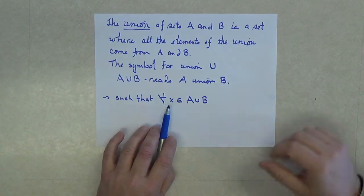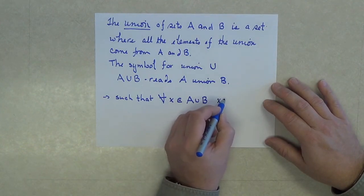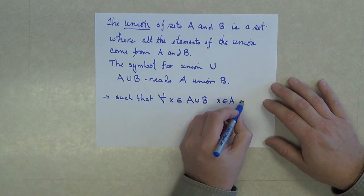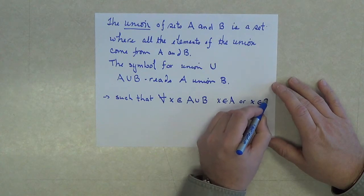For all x, an element of A or B, x is an element of A, or x had to be an element of B.